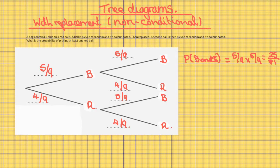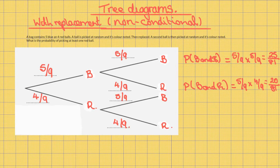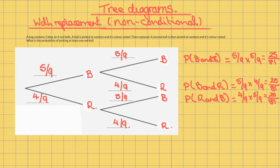The probability of blue and blue is five out of nine times five out of nine, which equals 25 out of 81. The probability of blue and red is five out of nine times four out of nine, which equals 20 out of 81. The probability of red and blue is four out of nine times five out of nine, which equals 20 out of 81.